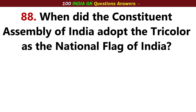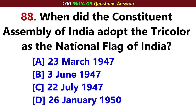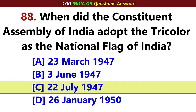When did the Constituent Assembly of India adopt the tricolor as the national flag of India? Answer, Option C: 22 July 1947.